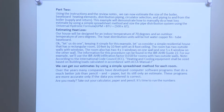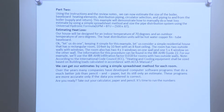Part 2: using the instructions and review notes, we can now estimate the size of the boiler, baseboard heating elements, distribution piping, circulator selection, and piping to and from the boiler supply return. This example demonstrates how to do a heat loss estimate using a simple spreadsheet method and size the pipe distribution system using the universal hydraulic formula: GPM equals BTUs divided by 500 times delta T. Our house will be designed for an indoor temperature of 70 degrees and outdoor temperature of 0 degrees. The heat distribution units will be hot water copper fin tube baseboard. Let's consider a simple residential room that is 10 feet by 10 feet by 8 feet with two outside walls with windows — two 4 by 3 windows on one wall and one 5 by 4 window on the other wall. This information can be found in the IBR AHRI Guide 22.